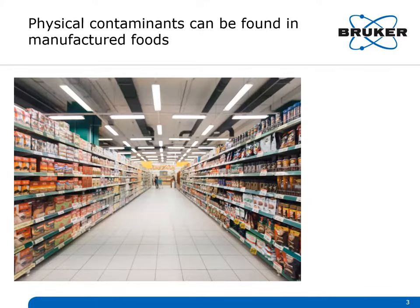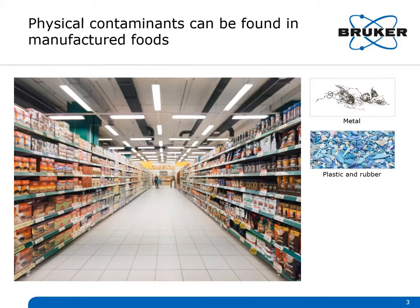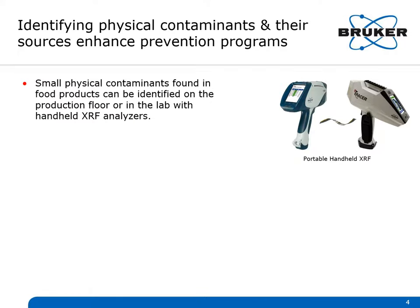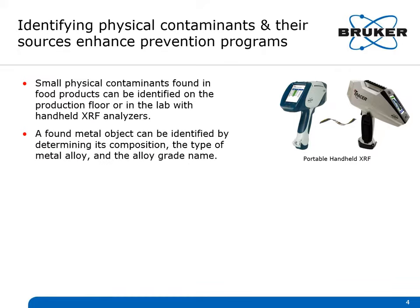The most common physical contaminants found in manufactured food products are slivers of metal, bits of plastic or rubber, small shards of glass, and even chips of stone or ceramic. A found metal object can be identified with XRF by determining its composition, the type of alloy it is, and the alloy grade name.